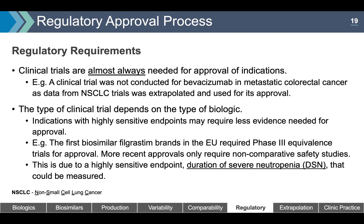Clinical trials are almost always needed for approval of indications. For example, a clinical trial was not conducted for bevacizumab in metastatic colorectal cancer — data from non-small cell lung cancer trials was extrapolated for its approval. The type of clinical trial depends on the biologic. Indications with highly sensitive endpoints may require less evidence. For example, the first biosimilar filgrastim brands in the EU required Phase 3 equivalence trials, while more recent approvals only require non-comparative safety studies, due to the highly sensitive endpoint of duration of severe neutropenia.